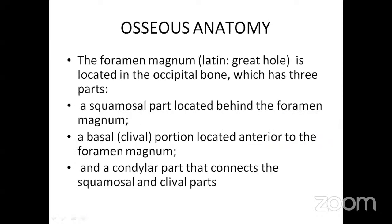The foramen magnum is a Latin term meaning 'great opening.' It is located in the occipital bone, which has three parts: a squamous part located behind the foramen magnum, a basal part (also known as the clival portion) located anterior to it, and a condylar part that connects the squamous and clival parts.